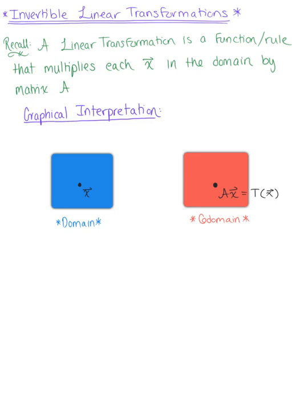Think about the graphical interpretation here. We know that our transformation t is mapping each one of these vectors x in our domain to the image in the co-domain defined by matrix A times vector x.